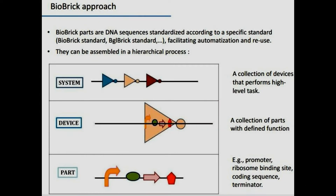In comes the BioBrick approach. BioBrick parts are DNA sequences that are standardized according to a specific standard, which may be a BioBrick standard, and it facilitates the automation and reuse of a particular sequence. They can be assembled in a hierarchical process with a three-level hierarchy of a system, device, and part. A system is a collection of devices that performs a high-level task. A device is a collection of parts with a defined function. A part may be a promoter, ribosome binding site, a coding sequence, or even a terminator.